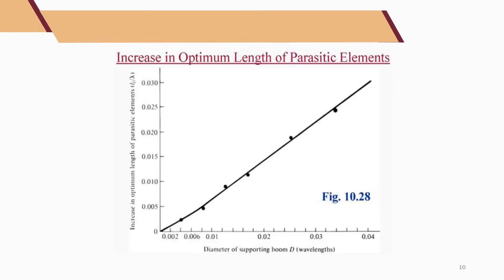Lastly, we refer to the correction factor figure (Figure 10.28), which tells us how much to increment the element lengths to calculate the final lengths in the design. Based on the boom diameter, for example 10 cm, we calculate the ratio D over lambda using the operating frequency of the design.